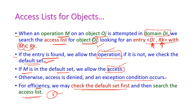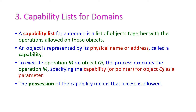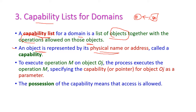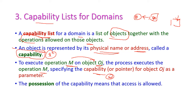For efficiency, we may check the default set first and then search the access list to reduce access time. The third method is capability list of domains. A capability list for a domain is a list of objects together with the operations allowed for those objects. The object is represented by its physical name or address in memory where the object is exactly stored, and this is called a capability. To execute an operation on a particular object, the process executes the operation specifying the capability — the address of the object — as a parameter.